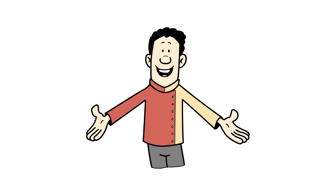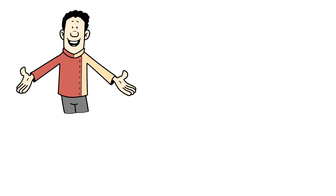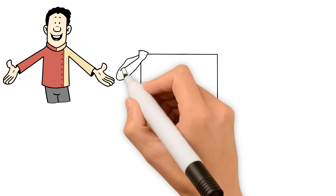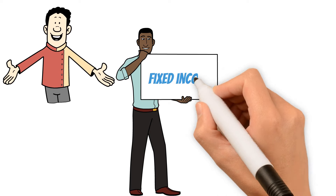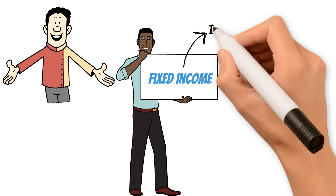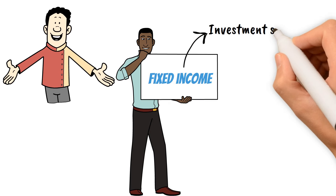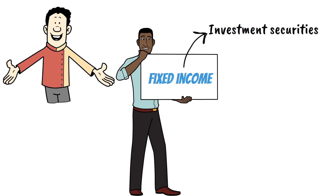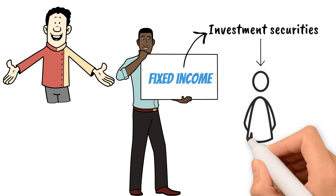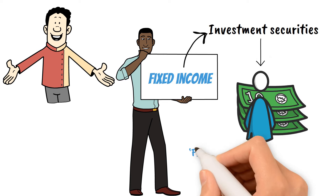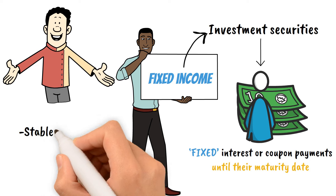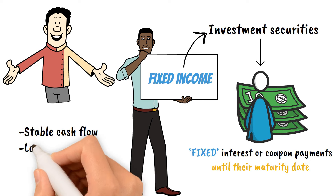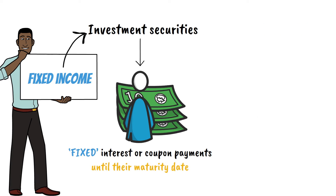Hello and welcome to the Capital Contrarian. Today we're going to go the boring route and talk about fixed income. Fixed income broadly refers to those types of investment securities that pay investors a fixed interest or coupon payment until the maturity date. These types of investments are known for their stable cash flow and low volatility.